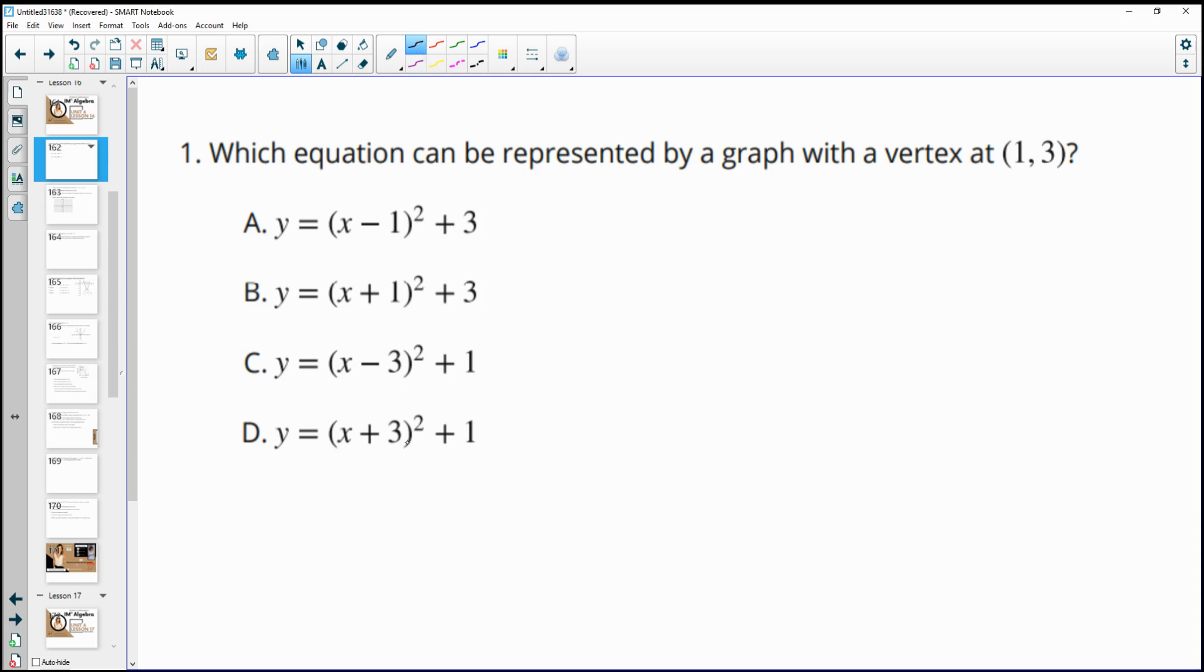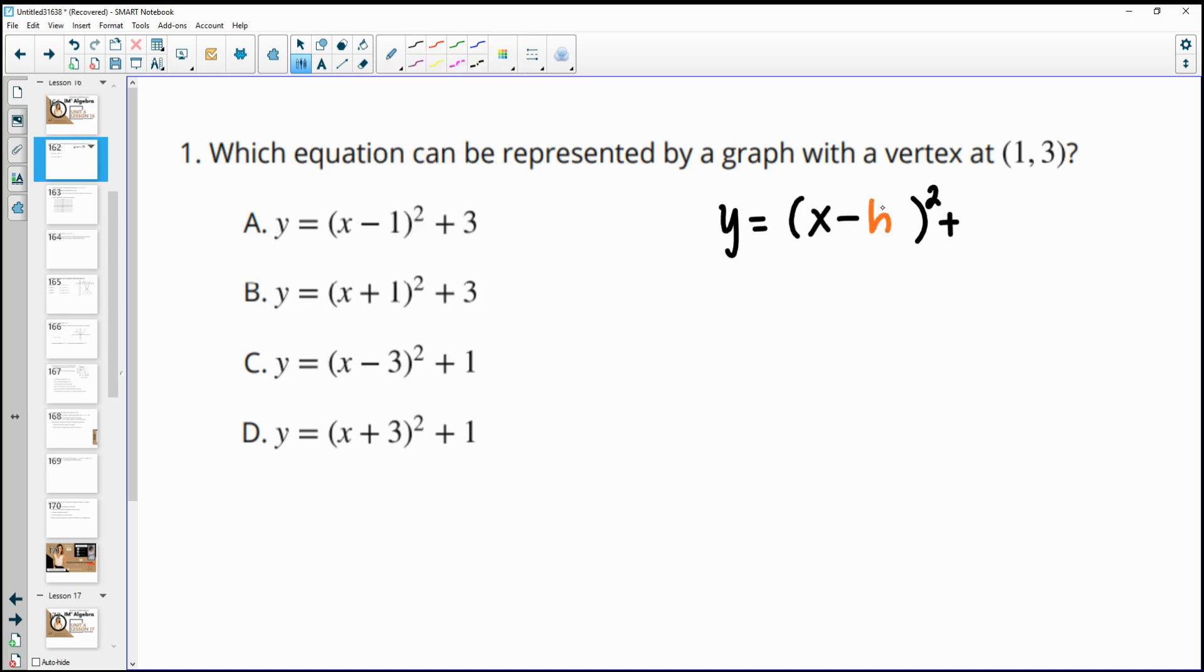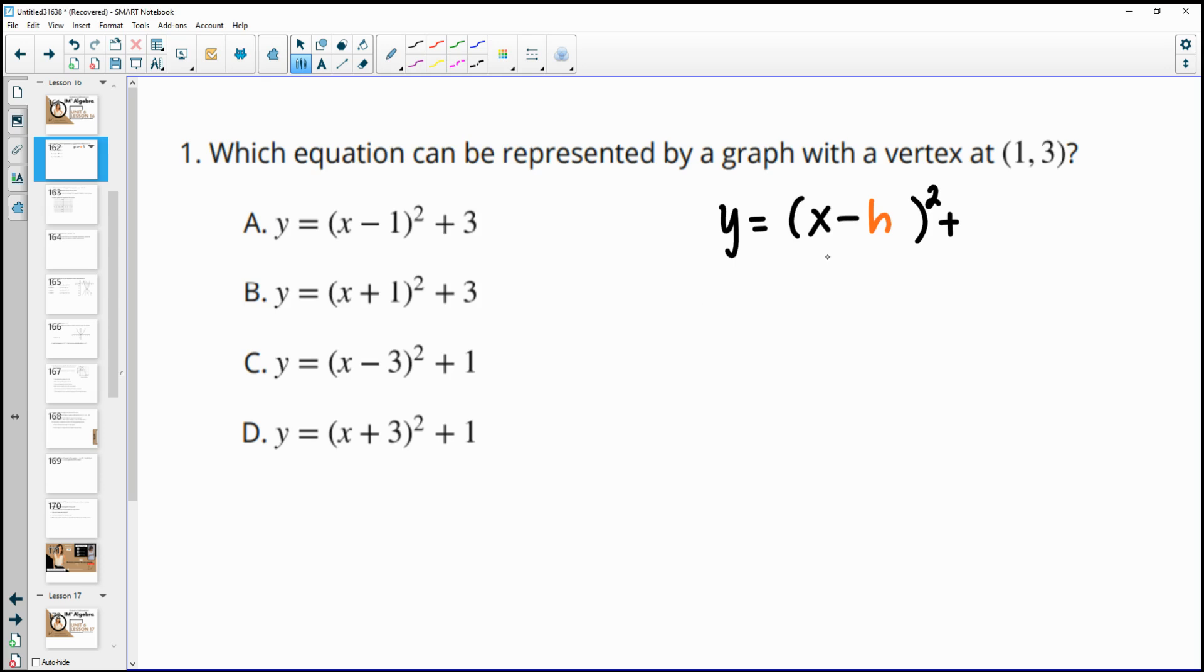So we see that all of these are in vertex form. Then you want to remember that for vertex form, we have x minus the x-coordinate squared and then plus the y-coordinate of the vertex. So this number that goes in here will appear to be the opposite because we've got this minus, and then the number on the outside will be exactly the same as the y-value in your vertex.